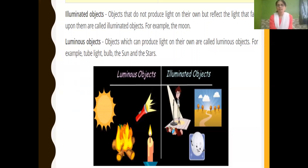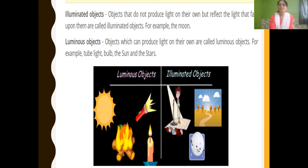Examples of luminous objects include tube light, bulb, sun, stars, candle, and the flame when wood is burnt. Non-luminous objects, that is illuminated objects, are objects that do not produce light on their own but reflect the light that falls upon them. For example, the moon.